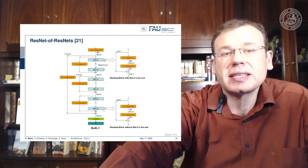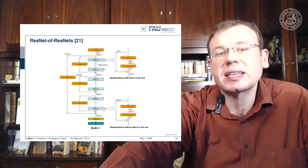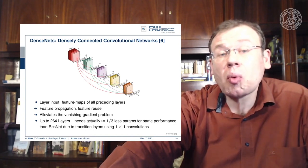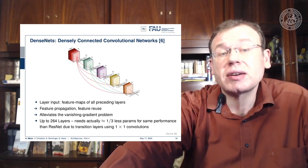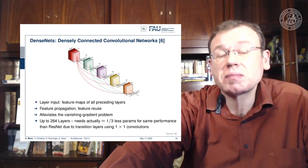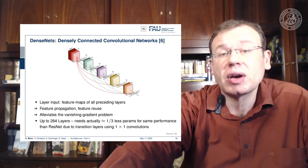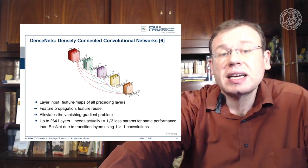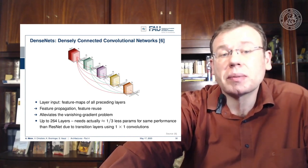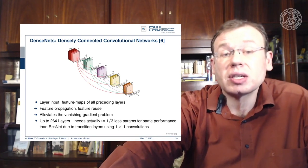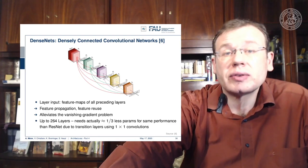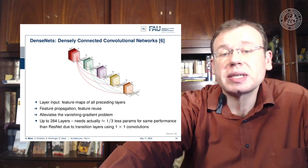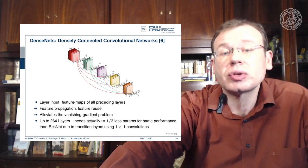You can combine these ideas — you can have a ResNet of ResNets — and you can build more residual connections with DenseNets, where you try to connect almost everything with everything. Densely connected convolutional neural networks have feature propagation, feature reuse, and they also alleviate the vanishing gradient problem. With up to 264 layers, you actually need one third fewer parameters for the same performance as ResNet, due to transition layers using 1×1 convolutions.